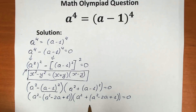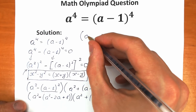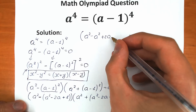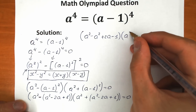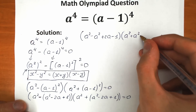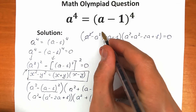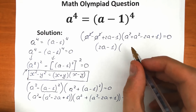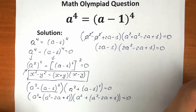Let's open our parentheses with the minus and plus signs. The first parenthesis: a squared minus a squared plus 2a minus 1. The second parenthesis: a squared plus a squared minus 2a plus 1, all equal to zero. The a squared terms cancel in the first parenthesis, leaving us (2a minus 1)(2a squared minus 2a plus 1) equal to zero.